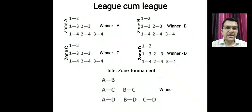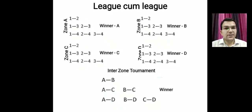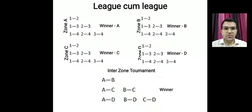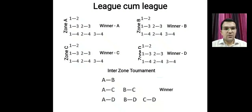In league-come-league, with sixteen teams again divided into four groups A, B, C, D, we first conduct a league within each group, then pick the winner of each group and conduct an inter-zone league tournament in the final round to find the ultimate winner.